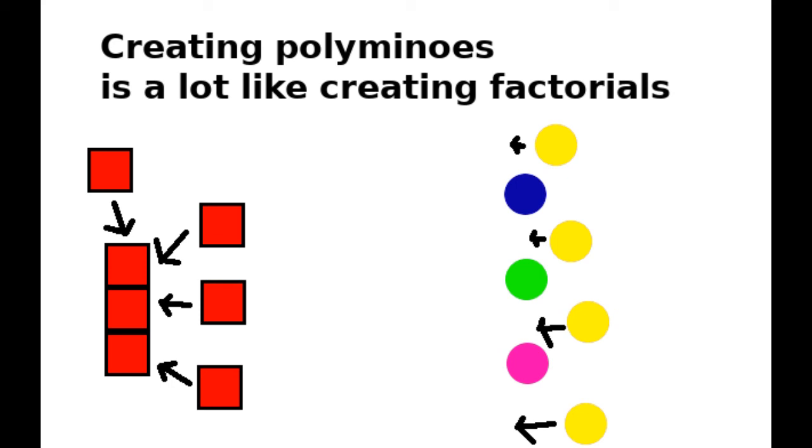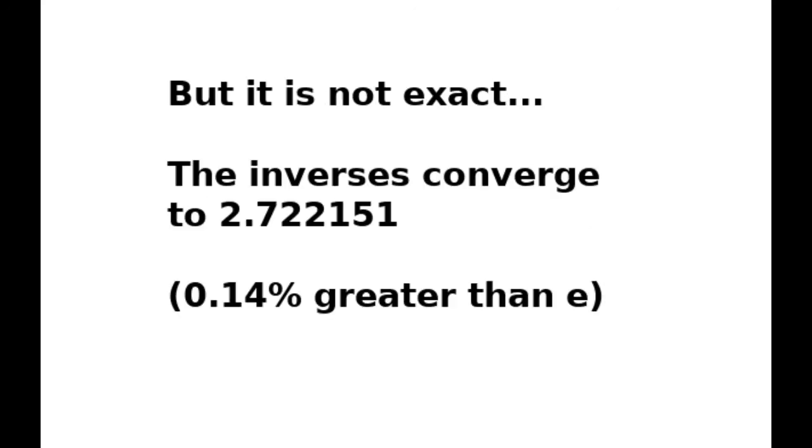There are differences, though, because the growth of polyominoes is restrained by the geometric constraints of the block. And that is perhaps the reason that, while it is close, it is not quite the same. Counting the inverses of the number of possible combinations up to 15 gives us 2.72215, which is a little over E.